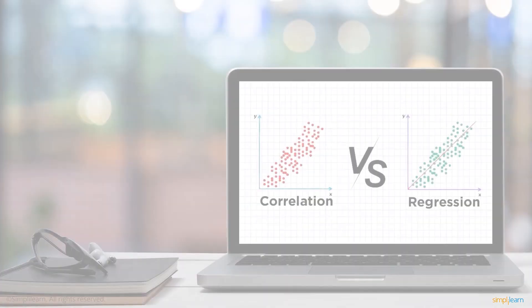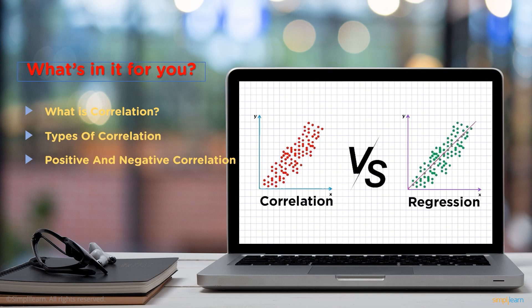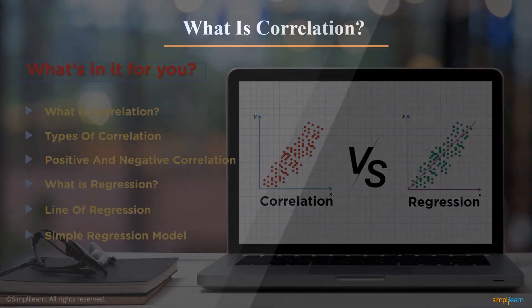We'll start this tutorial by discussing what is correlation, then we'll move on to understand types of correlation and we'll discuss one major type that is positive and negative correlation. After that, we'll move on to what is regression, lines of regression and then we'll discuss a simple regression model with its equation. Finally, we'll move on to Excel to discuss how we can calculate the regression using an example. So, let's begin.